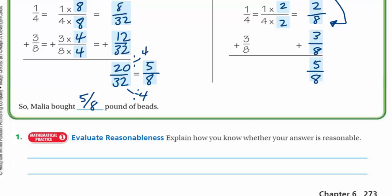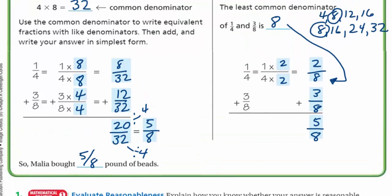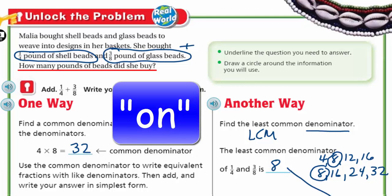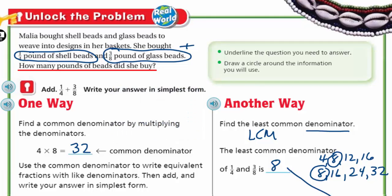Mathematical practice one. Evaluate reasonableness. Explain how you know whether your answer is reasonable. I think an estimate would have probably helped out. If I did an estimate, my two fractions, one was one-quarter, and the other fraction was three-eighths. Both fractions are less than one-half. So, my answer should definitely be less than one. If I were to kind of think of a quarter being pretty small, since five-eighths is close to the halfway mark, that makes sense to me.